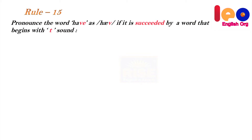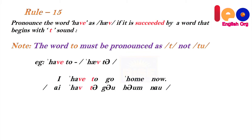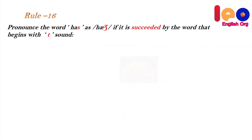Rule 15: Pronounce 'have' as 'have' if it is followed by a word that begins with a 't' sound. Note: the word 'to' must be pronounced as 't', not 'to'. Examples: 'how to', 'I have to go home now', 'you have to make it comfortable'.